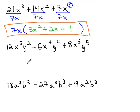In this next problem, 12x⁵y² - 6x⁴y⁴ + 8x³y⁵, we can see they're all divisible by 2.